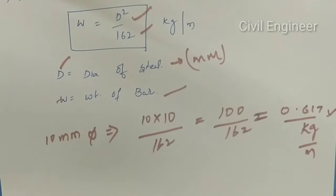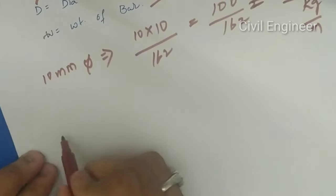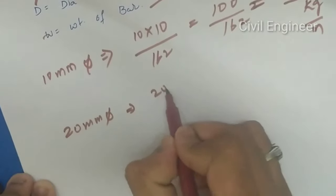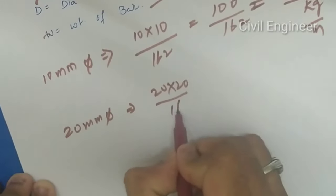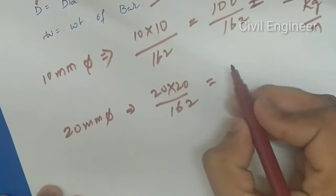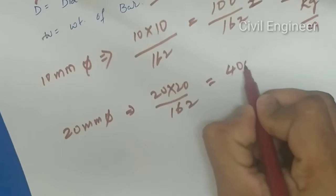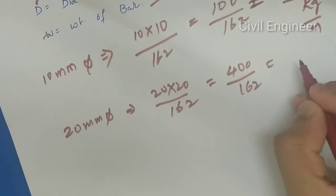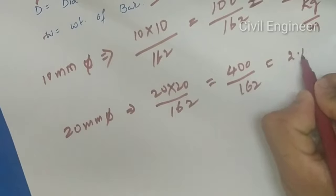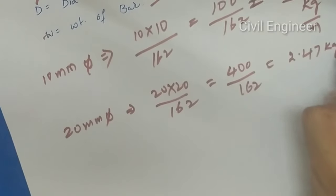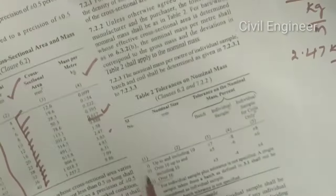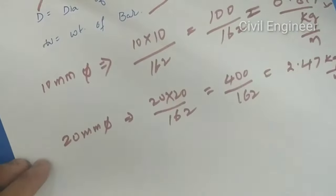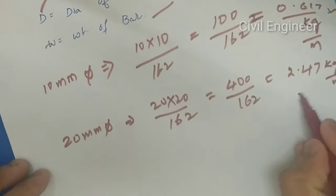If you choose the IS code, for example, we will calculate 20mm diameter. So 20 diameter: 20 squared equals 400 divided by 162, which calculates to 2.47 kg per meter. So if you choose 20mm diameter, it is 2.47 kg per meter.